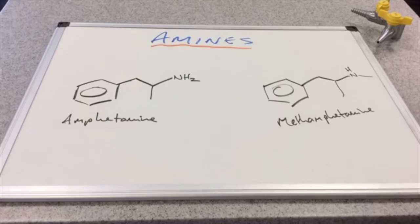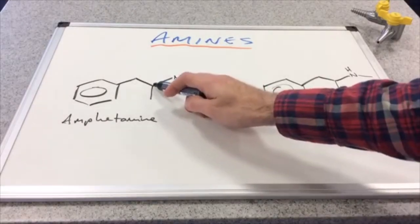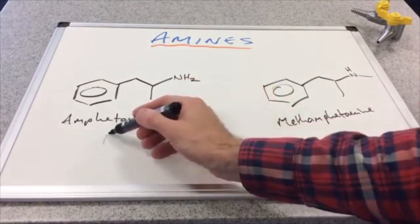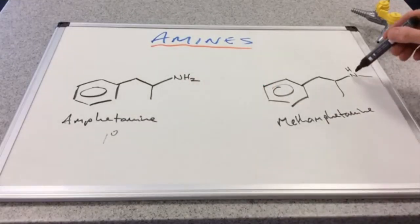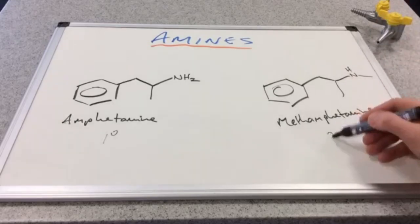So what class of amines do these belong to? Well the nitrogen here is bonded to just this carbon directly. So this is a primary amine. And this nitrogen here is bonded to this carbon, this methyl group here, and there's another carbon there. So this is a secondary amine.